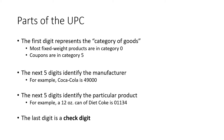The category of goods is a broad category. Most fixed-weight products are in category zero — things that are pre-packaged in the grocery store where every package is more or less exactly the same. Coupons, as another example, are in category five. The next five digits identify the manufacturer; anything manufactured by Coca-Cola would have 49000 there. The five digits after that identify the particular product — a 12-ounce can of Diet Coke would have code 01134. And then the 12th digit, the very last digit, is a check digit.